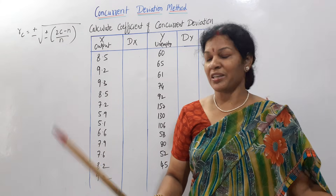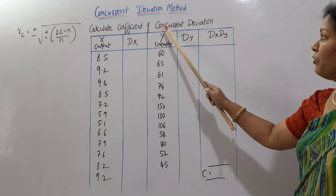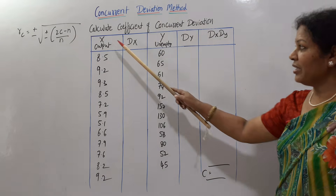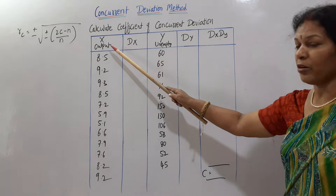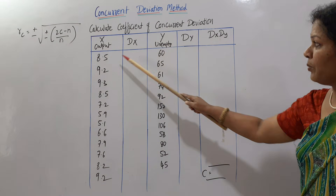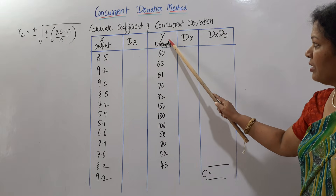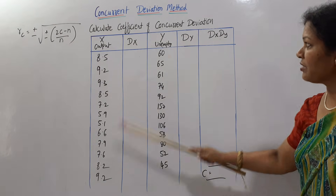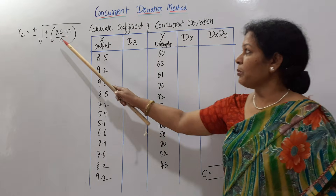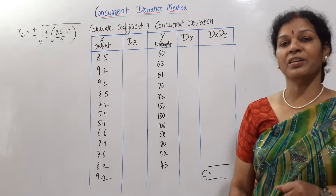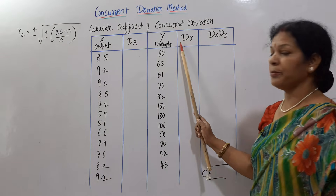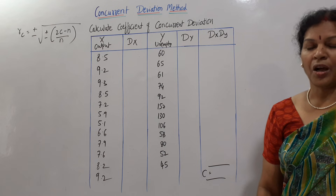Now let's see a problem. Calculate the coefficient of concurrent deviation. X values (output) and Y values (unemployed) are given. As per the formula 2C minus n by n, the columns required in the table are: dx, dy, and dx into dy.